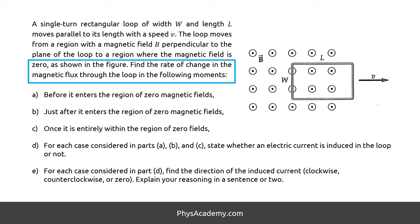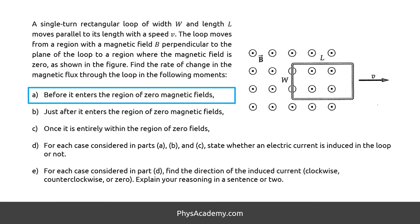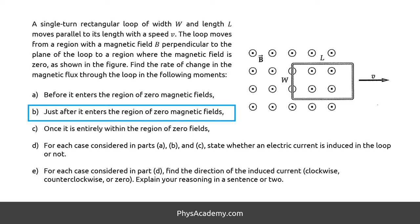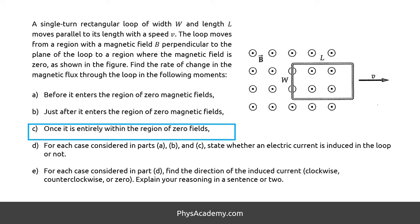Find the rate of change in the magnetic flux through the loop in the following moments. Part A: Before it enters the region of zero magnetic fields. Part B: Just after it enters the region of zero magnetic fields. Part C: Once it is entirely within the region of zero fields.